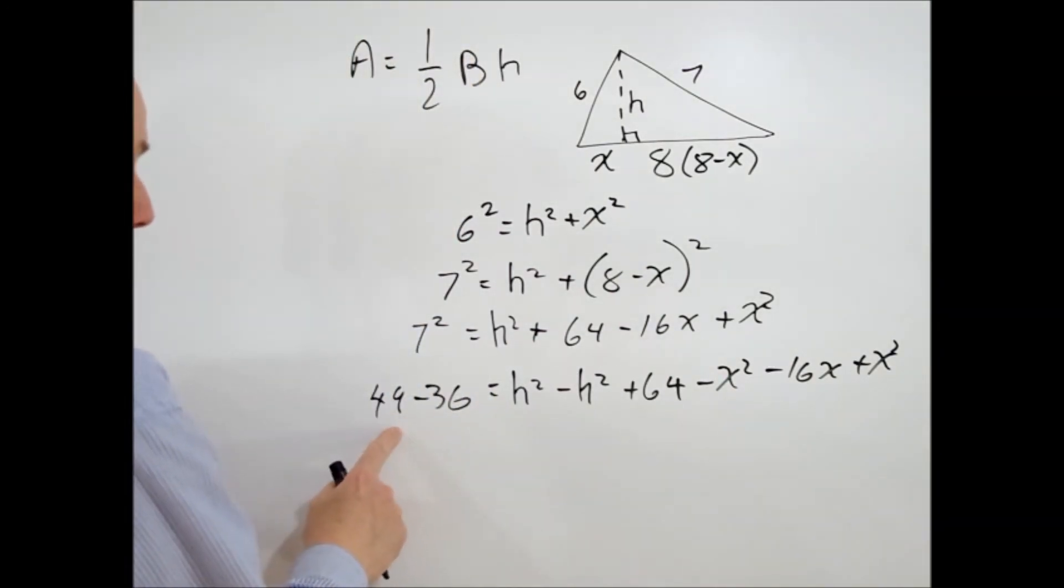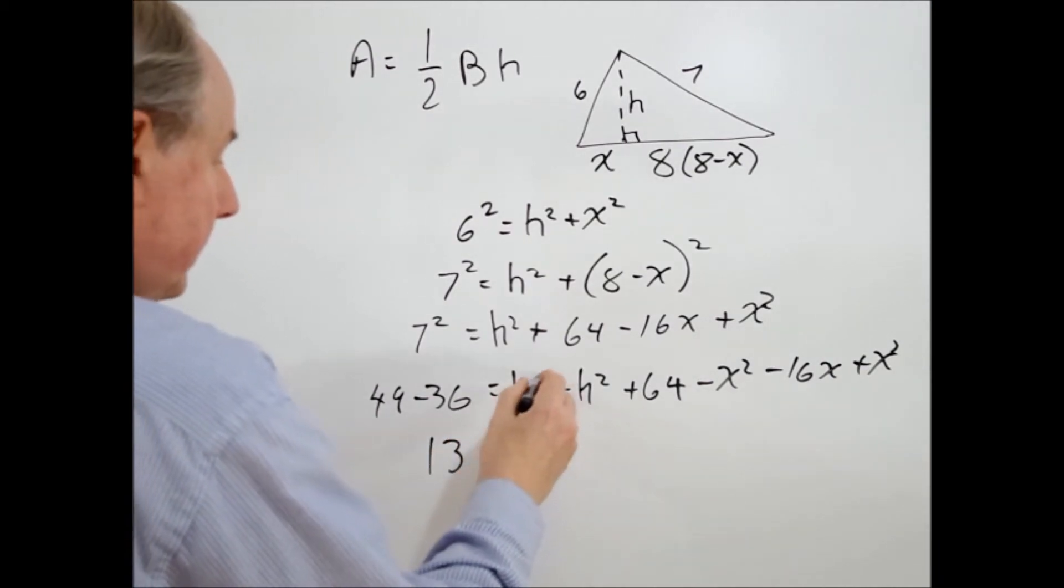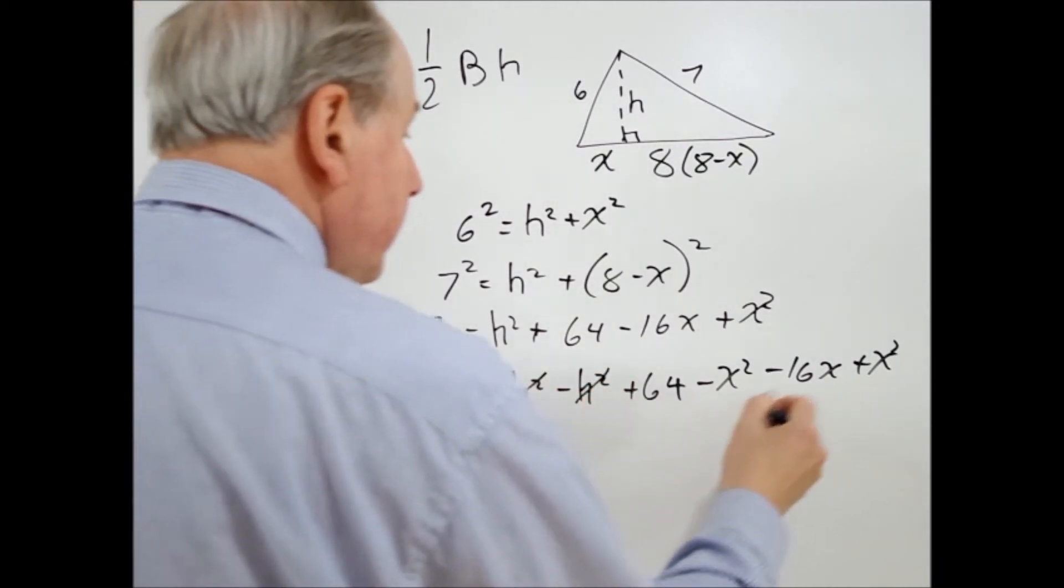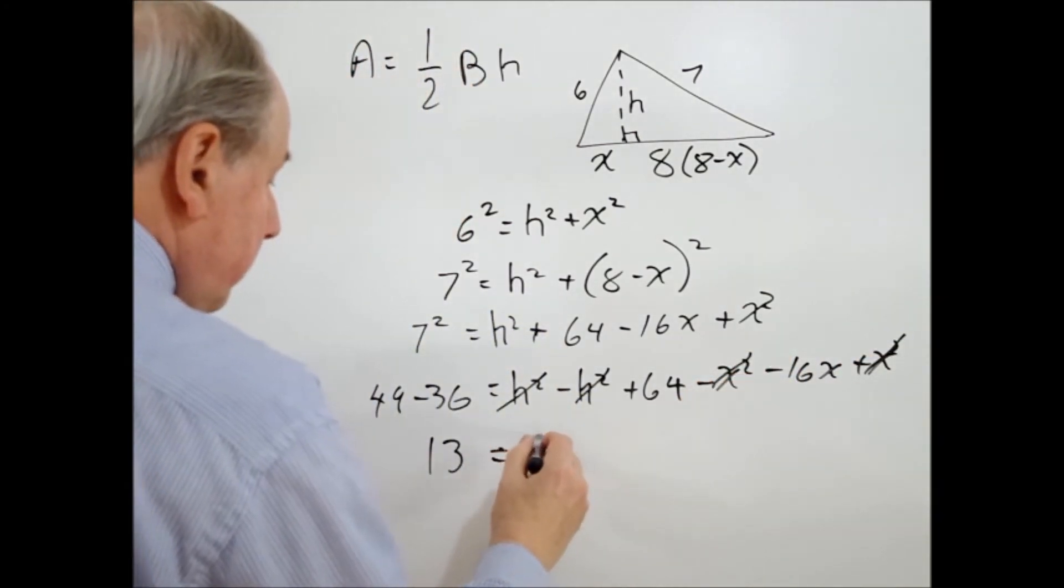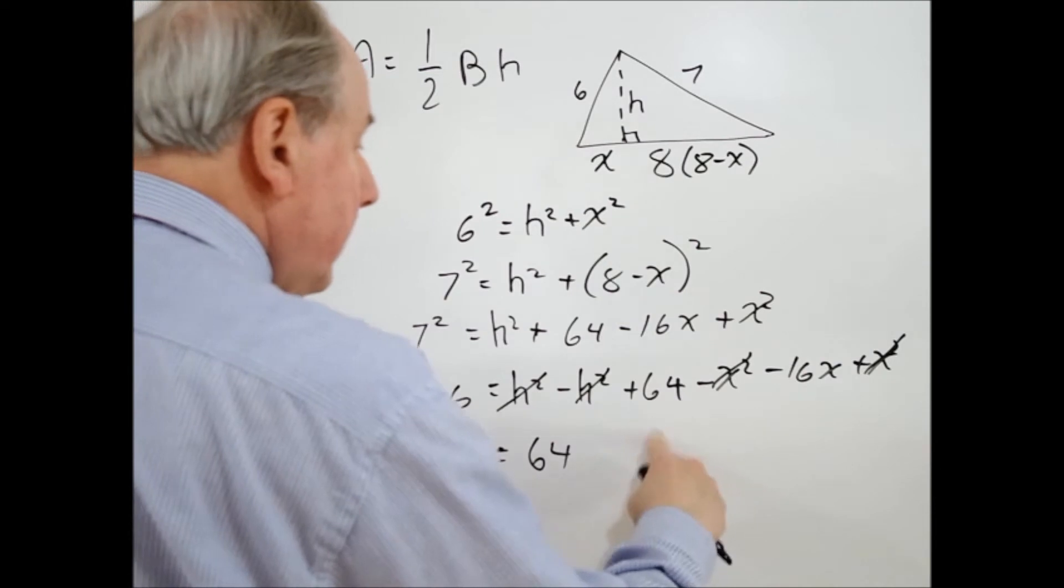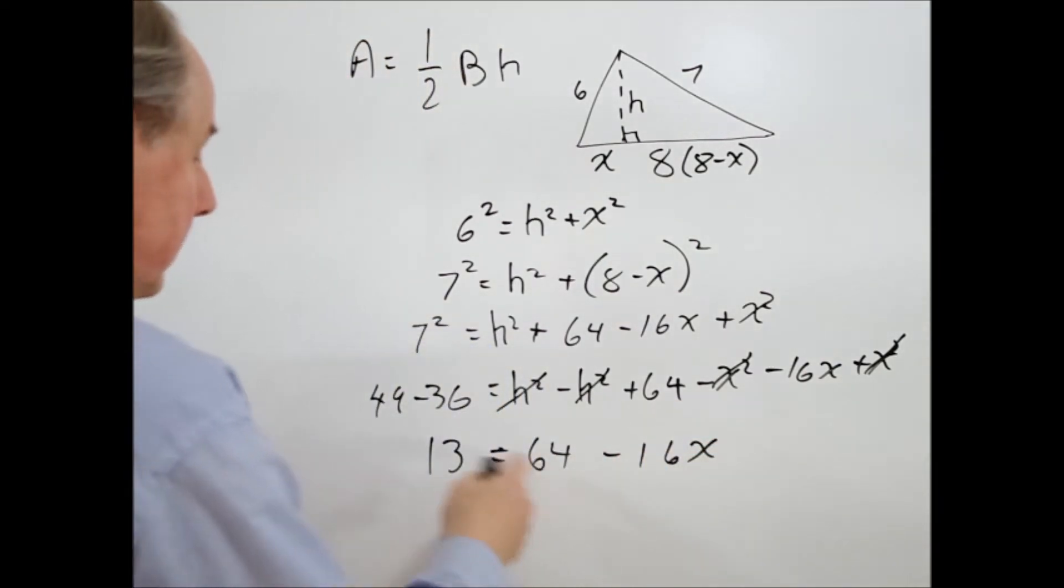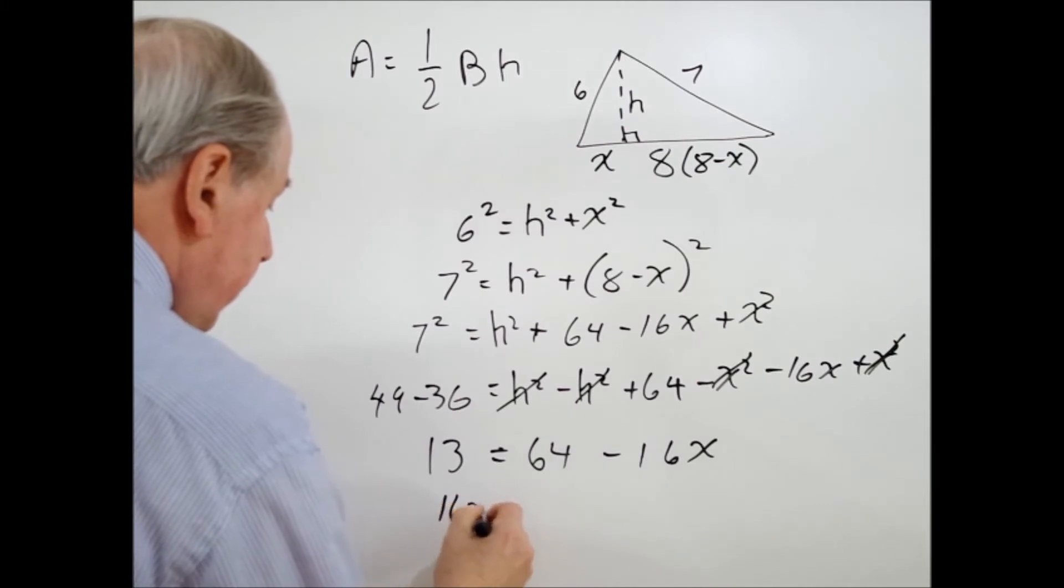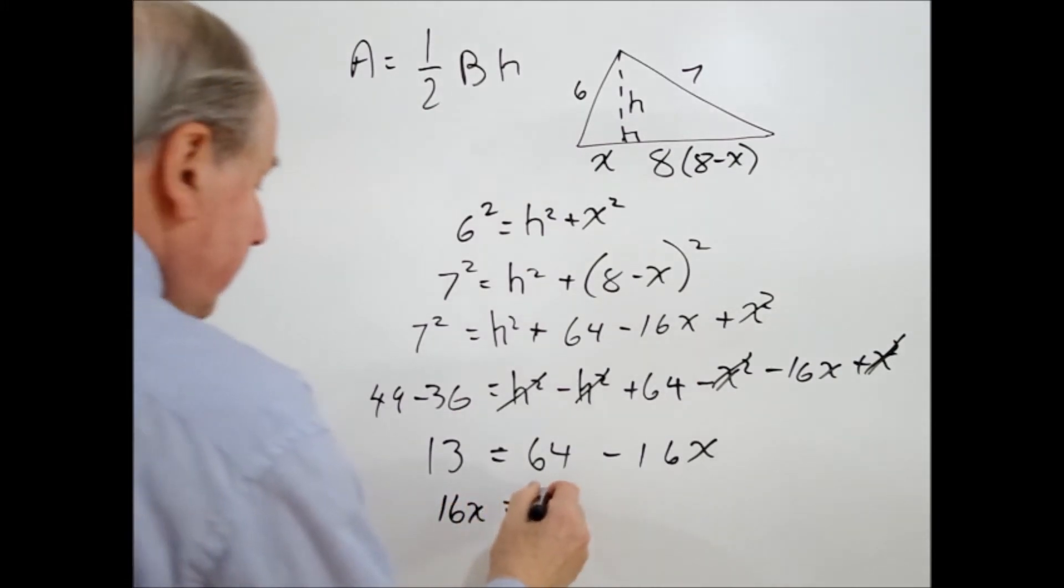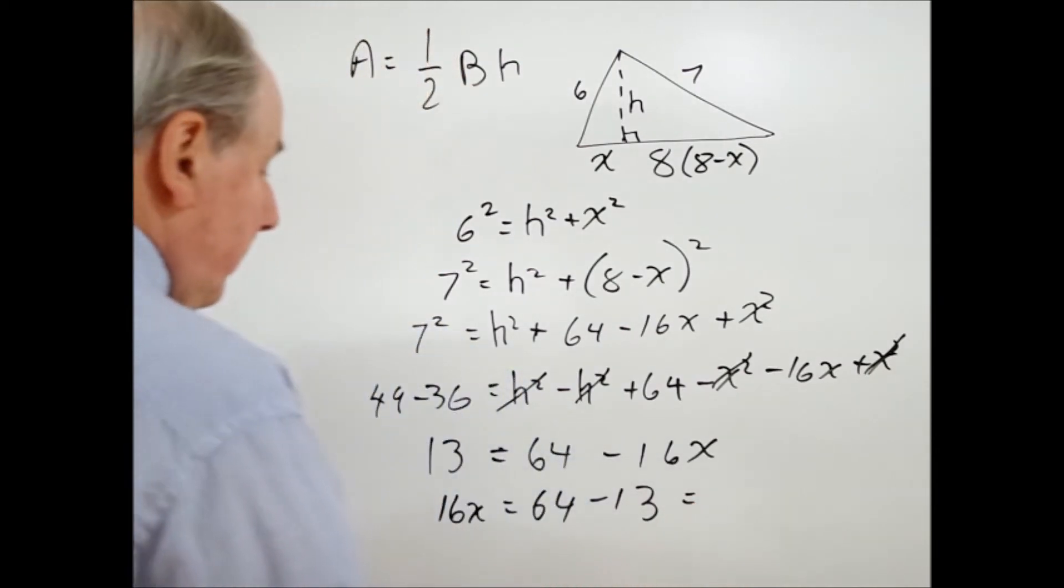We can do this, 49 minus 36, which is 13 equals this H squared and this one cancel out and this X squared and this one cancel out. So we have 64 that remains minus 16X. So the next step we can do is solve for X. So doing that, we'll transpose this to this side. So it becomes 16X equals 64 minus 13, which is equal to 51.